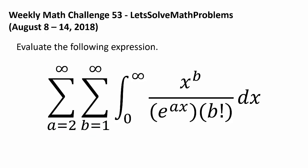Summation from a equals 2 to infinity of summation from b equals 1 to infinity of the integral from 0 to infinity of x to the b power over e to the ax times b factorial dx.